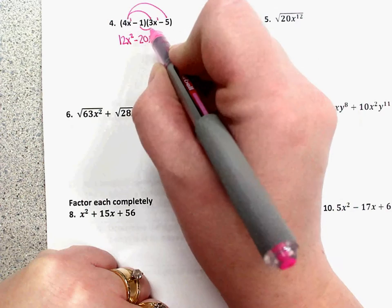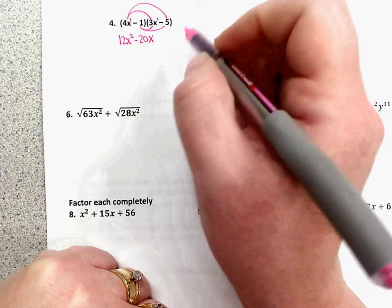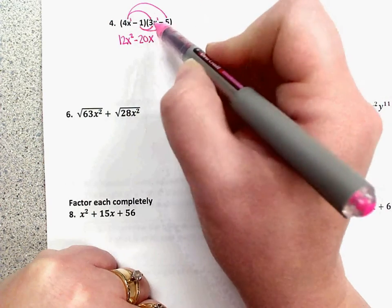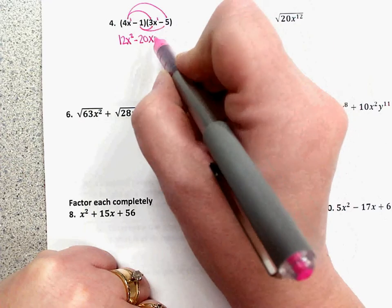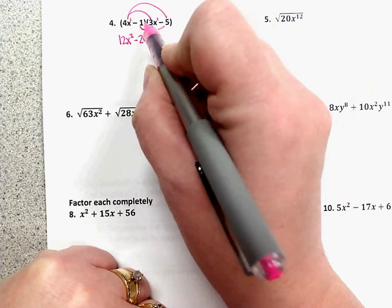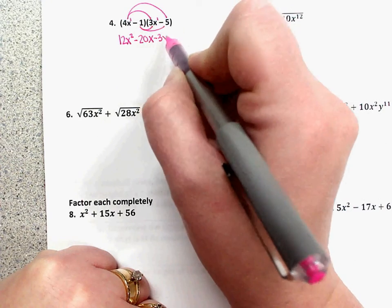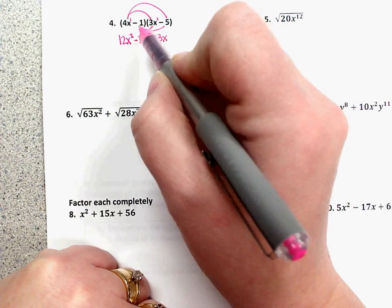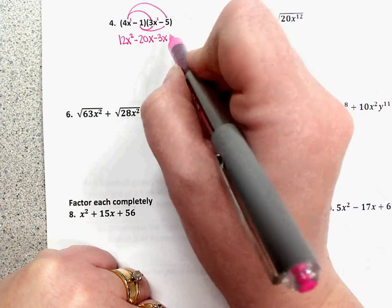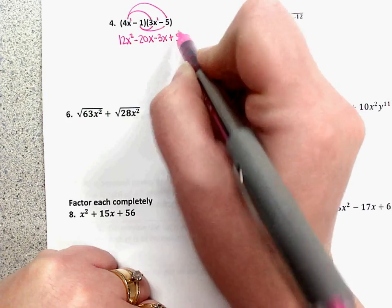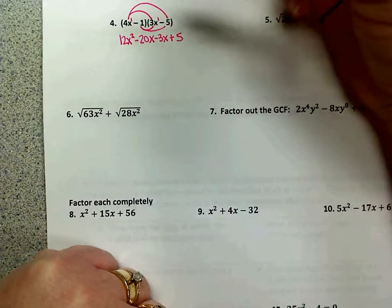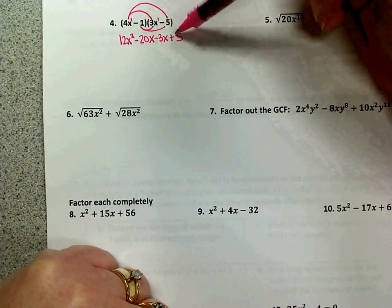Then you have to distribute the negative 1 times both terms in the other binomial. Negative 1 times 3x. Negative 1 times 3 is negative 3. You don't have an x. You do here, so it just remains an x. Negative 1 times negative 5 is positive 5. Remember your signs. Negative times negative is positive.